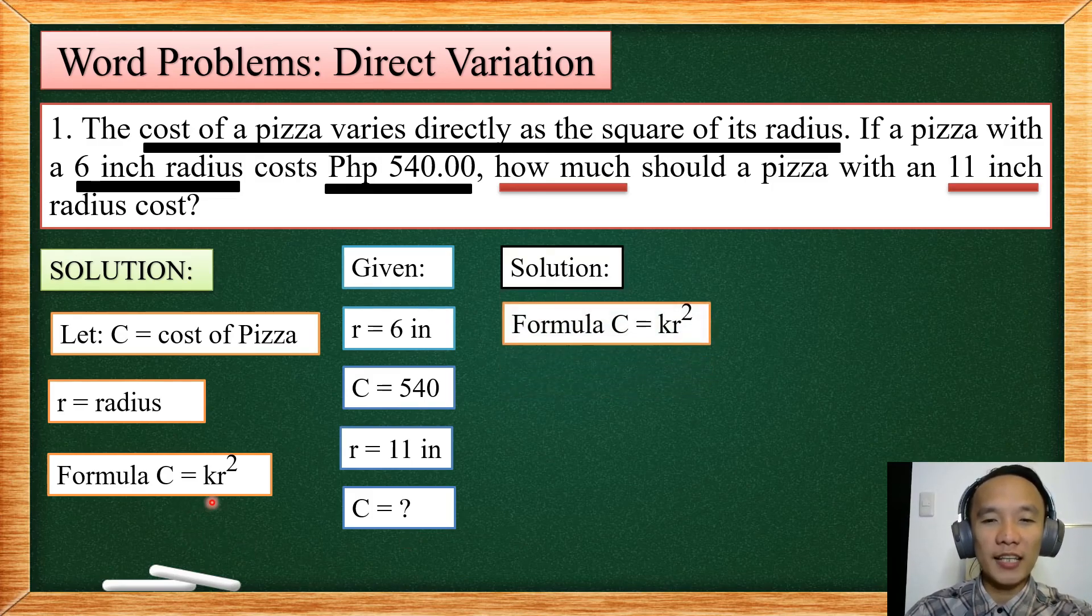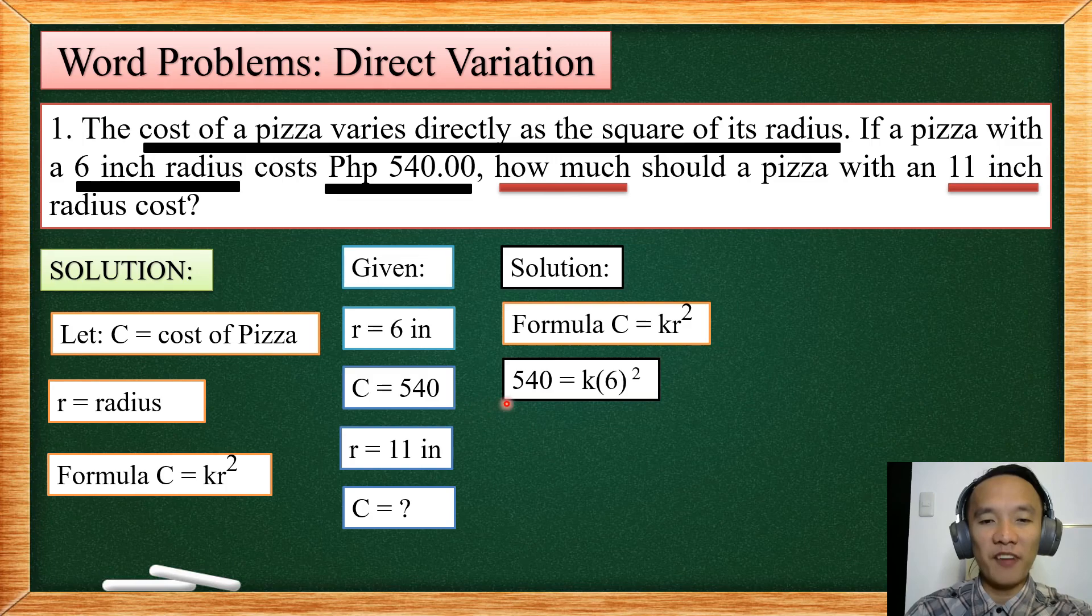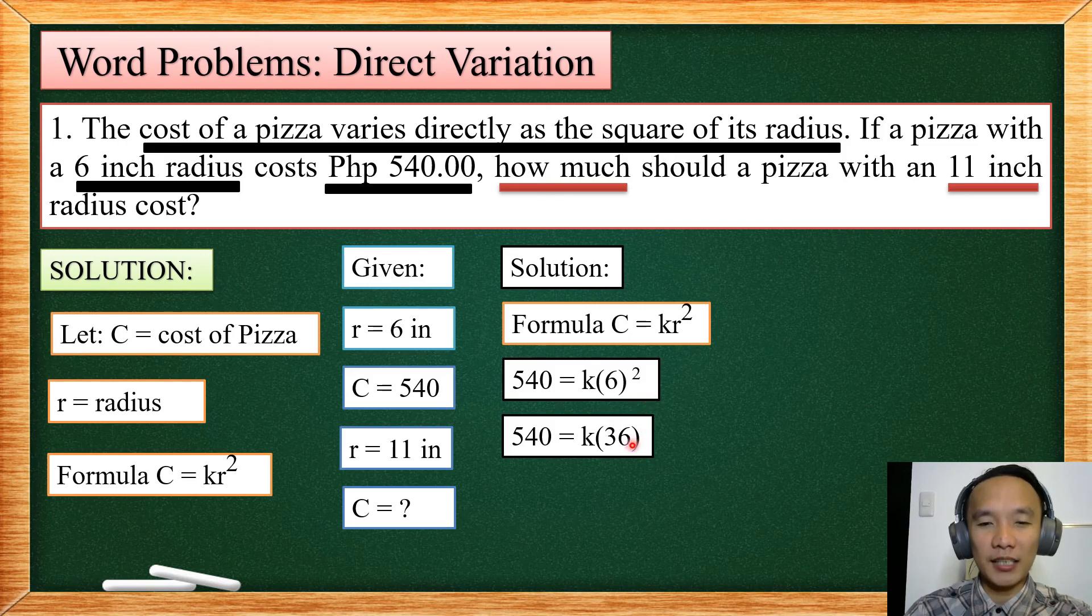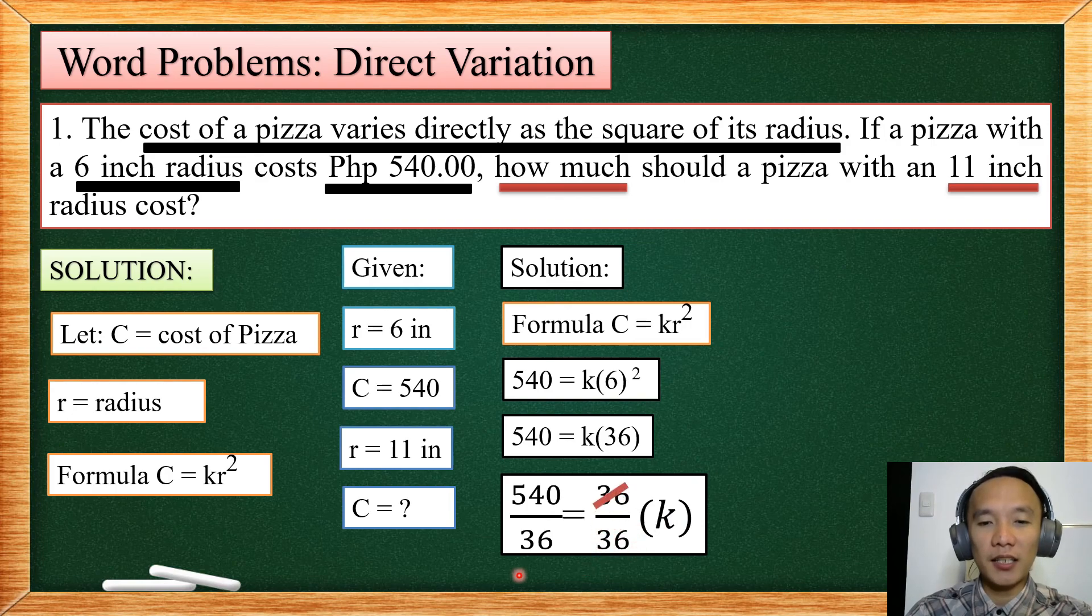First, we are going to find our constant of variation. So from the formula, we are going to replace first our C by 540 and our R by 6. So multiplying 6 times 6, that will give us 36. And dividing both sides by 36, so our constant now will become 15.